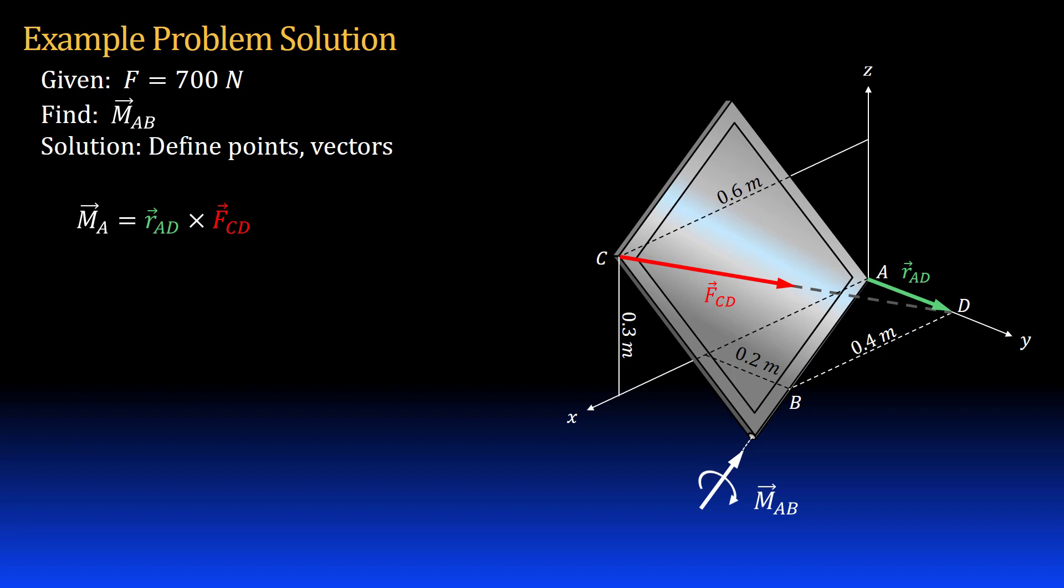I need to formulate my position and force vectors. To do that I will first get my coordinates for the key points. Point A is at the origin, point B is at 0.4 m x, 0.2 m y and 0 z, point C is at 0.6 m x, 0 y and 0.3 m z.